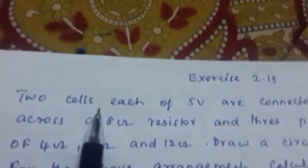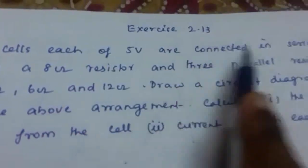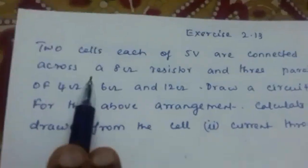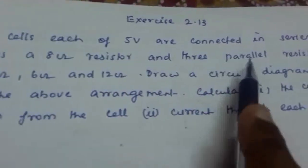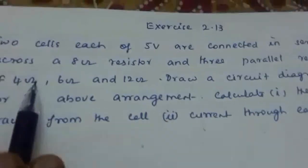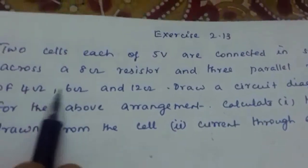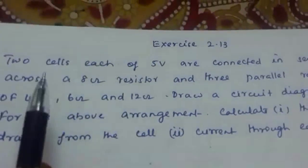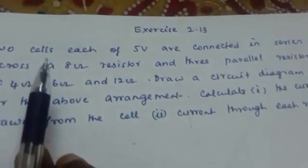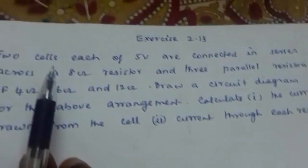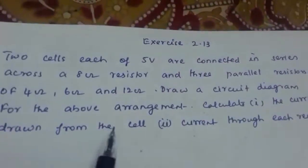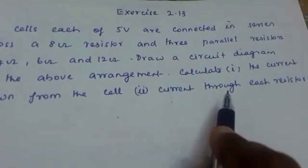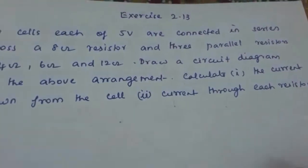Exercise 2.13: Two cells each of 5 volts are connected in series across an 8 ohm resistor and 3 parallel resistors of 4 ohm, 6 ohm, and 12 ohm. Draw a circuit diagram for the above arrangement. Calculate the current drawn from each cell. Calculate the current through each resistor.